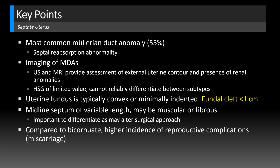Compared to bicornuate uterus, there's a higher incidence of reproductive complications — namely miscarriage — with septate uterus, so it is important to differentiate between the two on imaging. If a patient has recurrent fetal loss, resection of the septum might be considered, or even proactively as a patient is undergoing reproductive planning. This patient actually successfully had the septum resected.